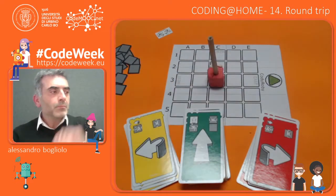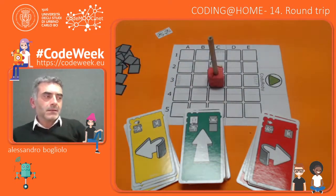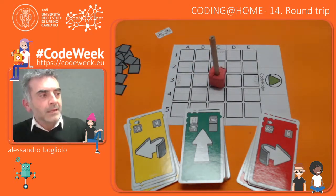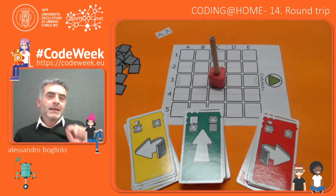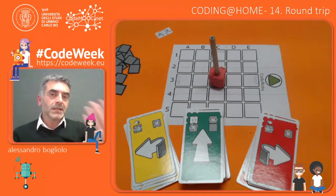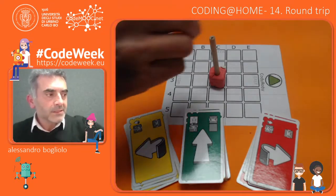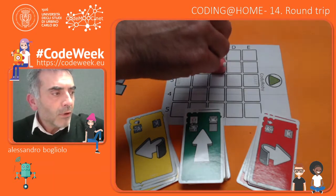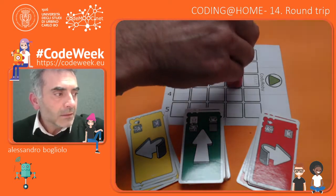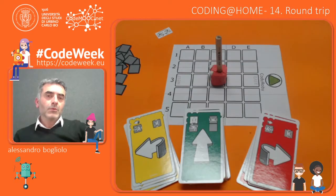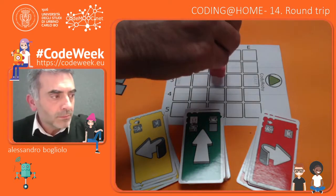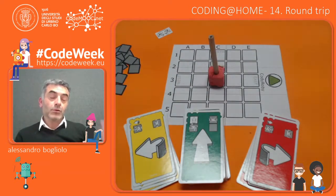When we bring him back, we can also try to make him exactly in the same position, facing the same direction. So, for instance, if this is the starting position, bringing Robby back doesn't mean just bringing him to the same square, but also turning him in order to make him face north again.